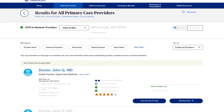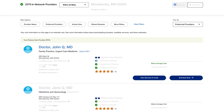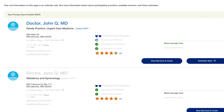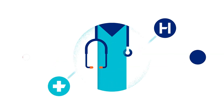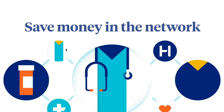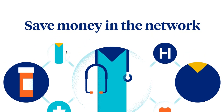First, green check marks tell you that the provider is accepting new patients or that the provider is in your health plan network. That's a good thing, because network providers may offer services at a lower cost. Next, you may see a blue number one, which means a tier one provider who may be recognized for delivering cost-effective care from your health benefits.